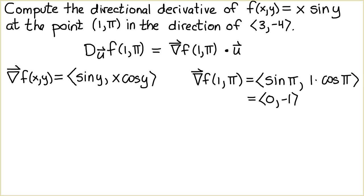To calculate the directional derivative, we also need to know the unit vector u. And the problem here is that the vector we're given, ⟨3,-4⟩, is not a unit vector.